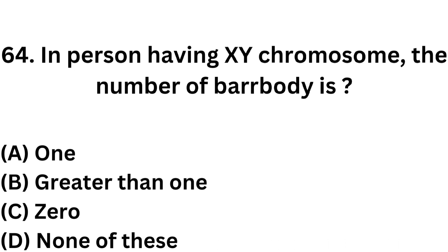Question number 64. In a person having XY chromosome, the number of Barr bodies is: Option A: 1, Option B: 1, Option C: 0, Option D: None of these.